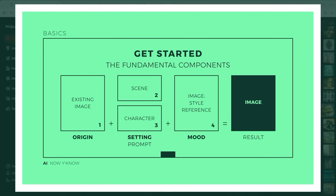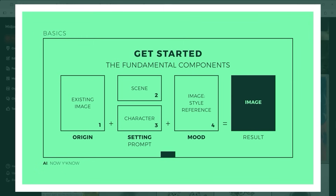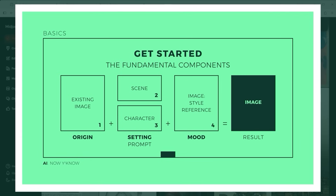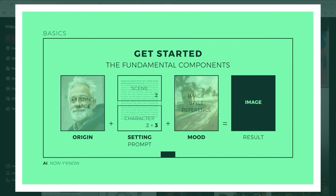Ingredient four is the mood. Technically optional, but crucial if you want a specific look. Retexture lets you include style references. This fourth ingredient doesn't have to match the setting itself — you're not showing the jungle, for example. You're just telling the AI: this is the kind of light, colour and atmosphere I want. Let me show you how this comes together. The origin: this friendly man. The setting: a desert planet. The character prompt: that same friendly man, described in detail. And the mood, shaped by a photo of a driver, used to define the light and colour.